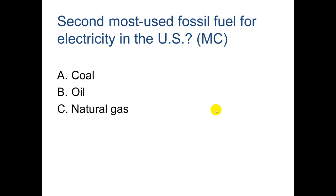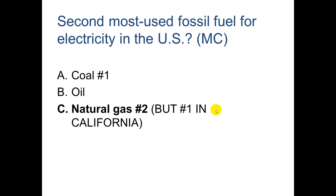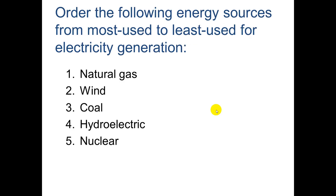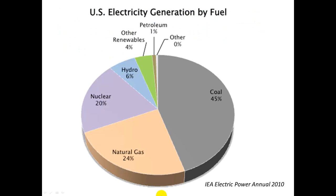The second most used fossil fuel for electricity in the US is natural gas — coal is number one, but in California natural gas is number one. Ordering energy sources from most to least used for electricity generation: coal, then natural gas, then nuclear, then hydroelectric, and then wind. Hydropower is only six percent; other renewables including wind and solar are very small components, but wind is growing the fastest of all renewable energy sources.